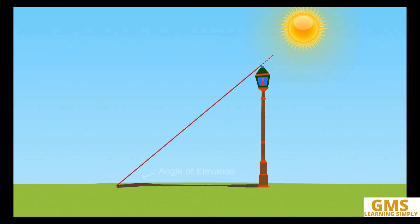The top of the pole makes an angle of elevation at the tip of shadow of the pole.